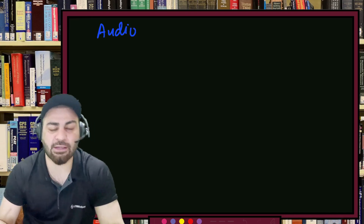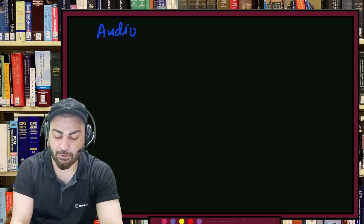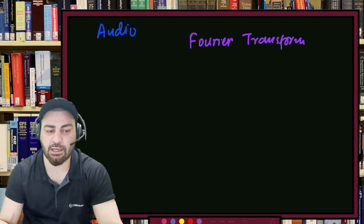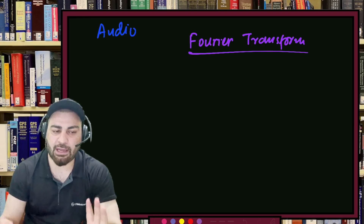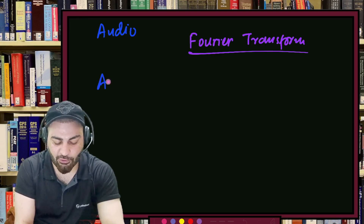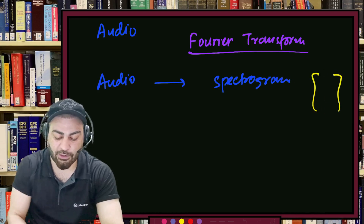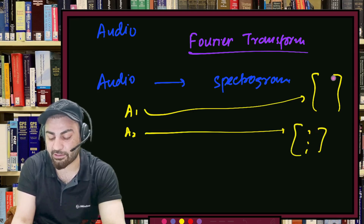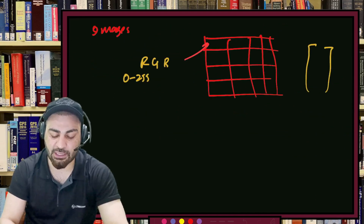For audio: audio signals have frequency coefficients. They can be transformed into vectors of frequency components using a technique called the Fourier transform. The result is called a spectrogram, which is nothing but a vector. Each audio signal corresponds to a bunch of numbers.